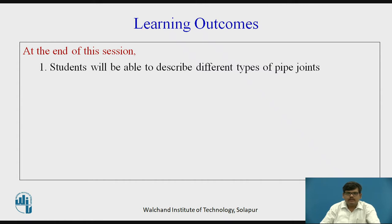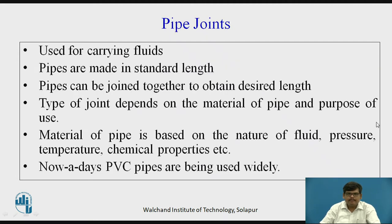I suggest you pause the video and recollect the different pipe joints that you have seen till now in day-to-day life. Pipe joints are basically used for carrying fluids from one place to another. As we all know, pipes are made in standard lengths, and beyond that standard length we do not get pipes. So to have the desired length, we join two pipes by different joining components. The type of joint required depends on the material of the pipe and the purpose of use.